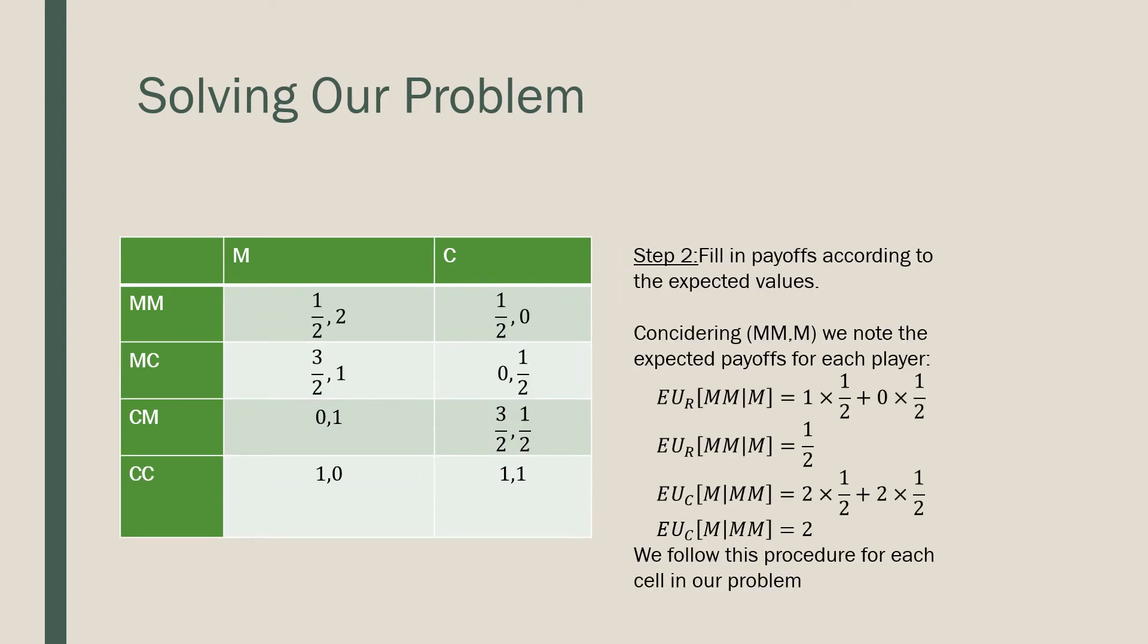We're going to then fill in our payoffs according to expected values. These are given by our conditional expectation times our probabilities given by nature. You can try pulling it out yourself from the other examples, but I'm going to assume you watched the other video where I go through this same process. So I'm just leaving it here and we'll move on to our next part.